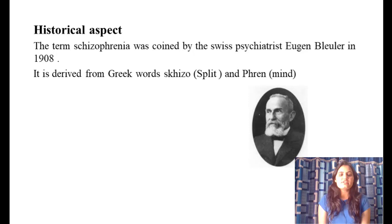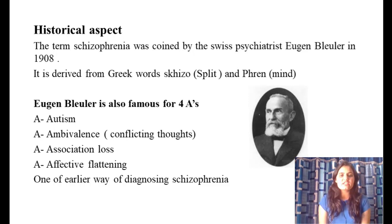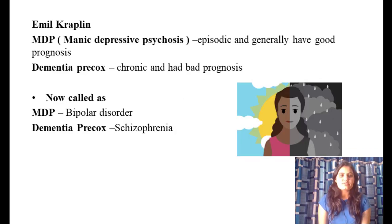Eugen Bleuler is also famous for his Four A's: Autism, Ambivalence, Associative Looseness, and Affective Flattening. Earlier, Emil Kraepelin made it easier to diagnose schizophrenia by distinguishing two conditions: manic depressive psychosis and dementia praecox.